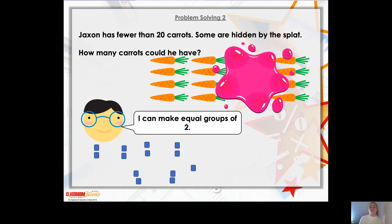And I've put them into groups of two with 13 carrots. Have I made equal groups of two? Well, no, I haven't. Because look, there's one carrot on its own that hasn't got a partner. So therefore it can't be 13.